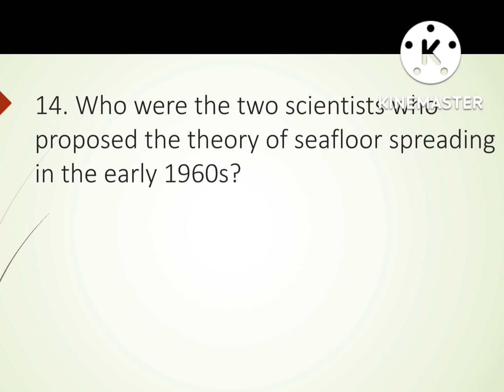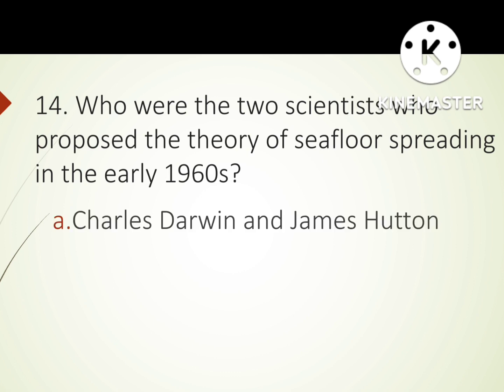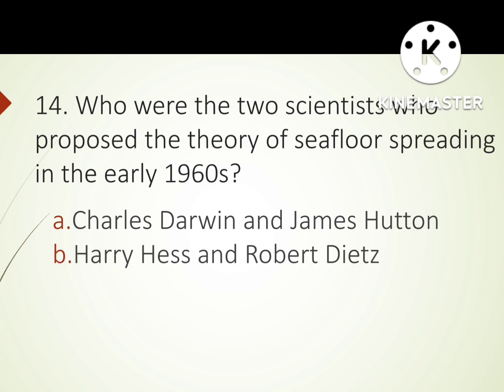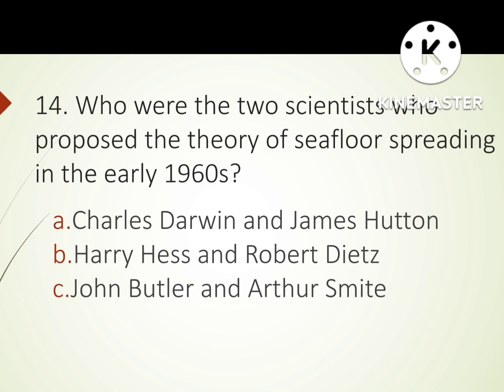Number 14 question: Who were the two scientists who proposed the theory of seafloor spreading in the early 1960s? A. Charles Darwin and James Hutton. B. Harry Hess and Robert Dietz. C. John Butler and Arthur Smythe. D. F. Vine and D. Matthews. The correct answer is B: Harry Hess and Robert Dietz.